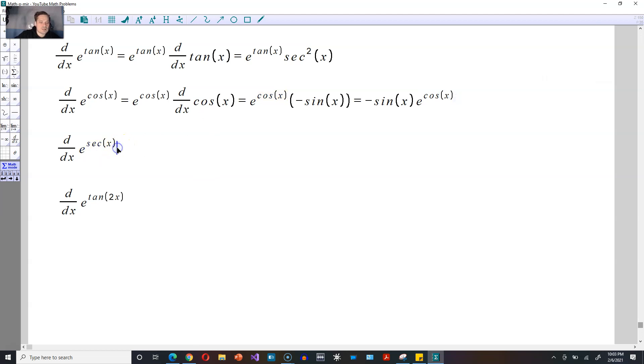For the next one, again, same principle. e to the secant of x, multiply by the derivative of the inside. The derivative of secant of x gives you the following: e to the secant of x, and then tangent of x times secant of x.